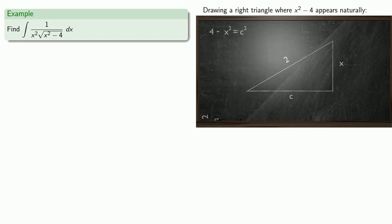So we'll try again, this time making x the hypotenuse. We'll write our Pythagorean relationship, do a little algebra, and finally we have a triangle where x squared minus 4 appears naturally.